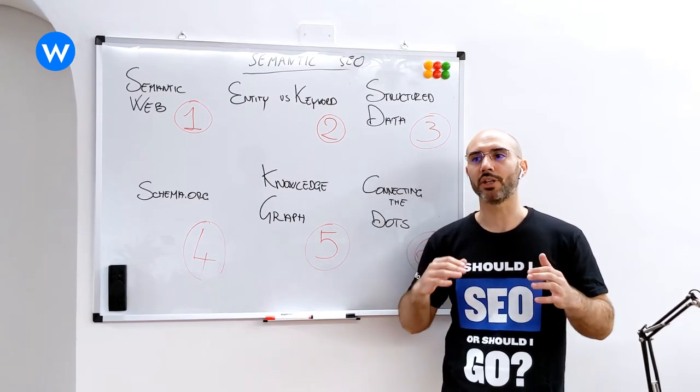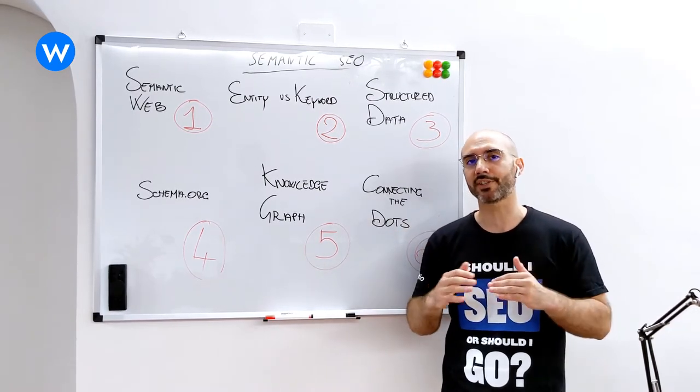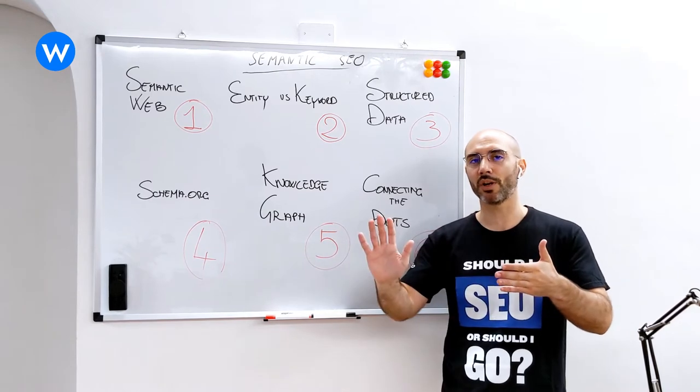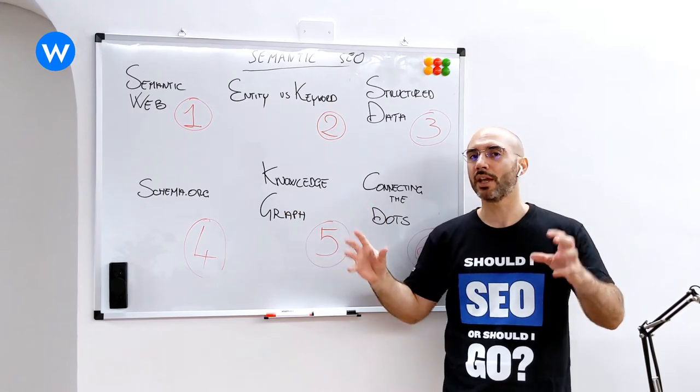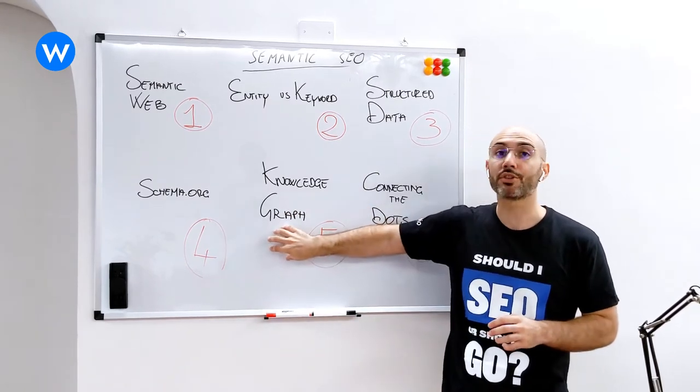And when we mix triples, when we mix several statements like Gennaro works at Warlift, Warlift is a tech company, and all the other statements that we can build around it, we actually build up what is called a knowledge graph.